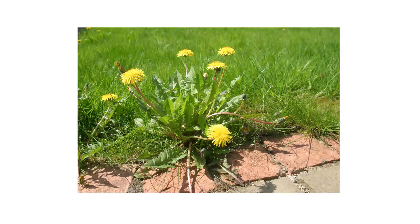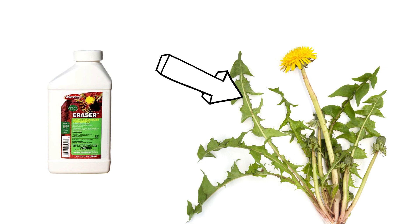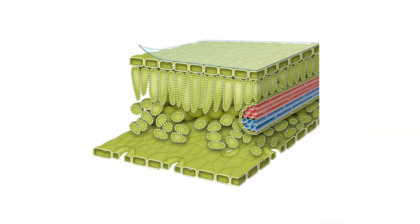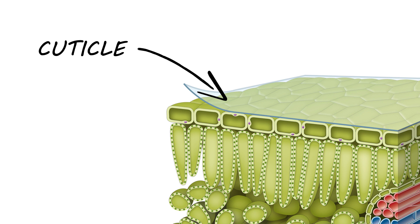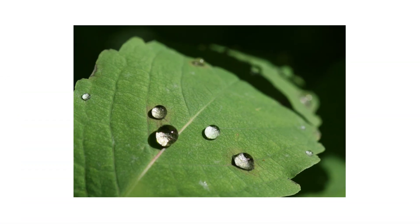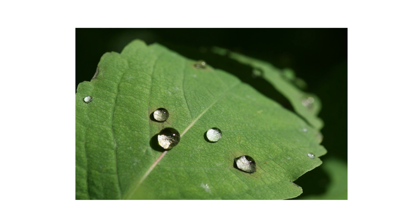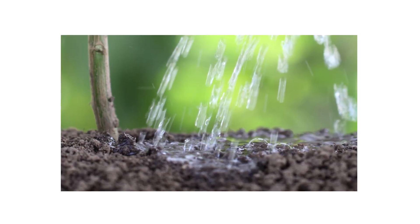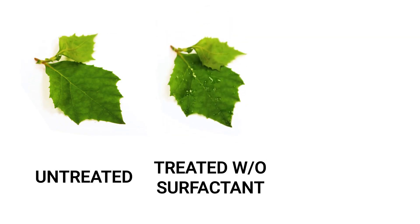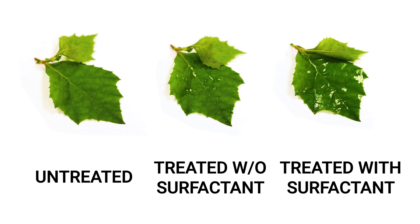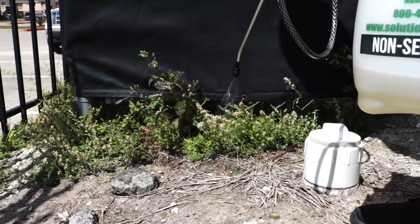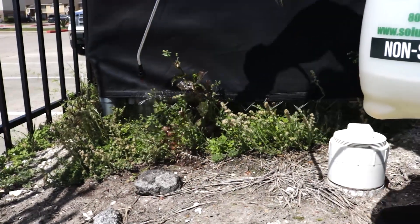One way a surfactant can be used is with the treatment of problematic weeds. For example, a glyphosate product has to come into contact with the plant's leaves and stick long enough to be absorbed into the tissue. However, plant leaves have an outer waxy layer called the cuticle, which will cause liquids to form beads of water that easily roll off the plant due to their high surface tension, rendering the herbicide ineffective. With a surfactant, you enhance the pesticide application by breaking down the waxy cuticle and the liquid's surface tension, causing the product to spread evenly over leaf surfaces. This ensures the glyphosate sticks to the leaf surface and gets absorbed into the plant.